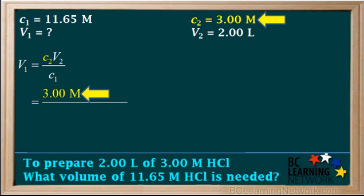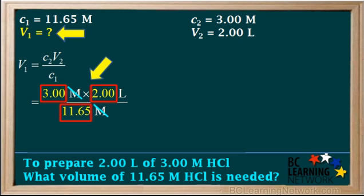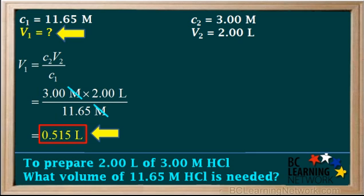The final concentration, C2, is 3 M. The final volume, V2, is 2 liters. And the initial concentration, C1, is 11.65 M. Now we use this expression to calculate the value for the initial volume, V1. We cancel out the molarity unit and go 3 times 2 divided by 11.65, which comes out to 0.515 liters.